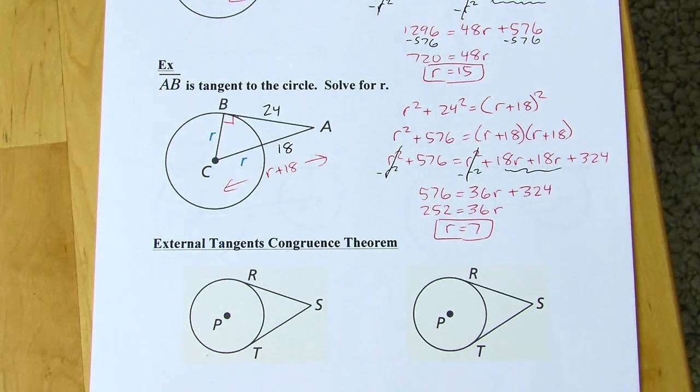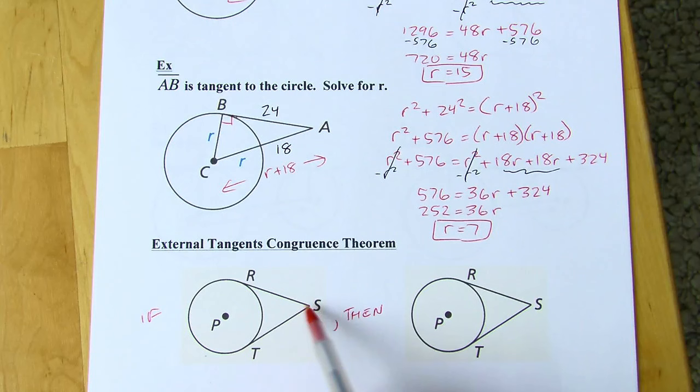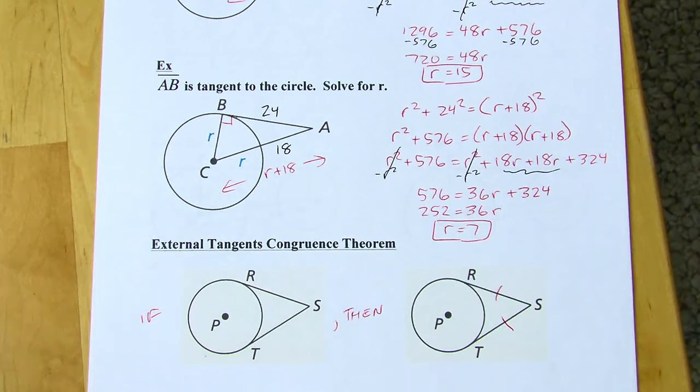Next up: the external tangents congruence theorem. I sometimes refer to this as the ice cream cone situation — it kind of looks like an ice cream cone. If we have two tangent segments that meet up outside a circle and are both tangent to the same circle, then the two sides of the ice cream cone are congruent. That is the theorem.